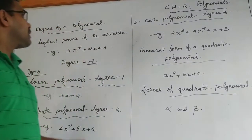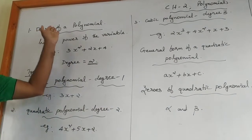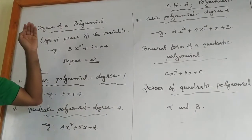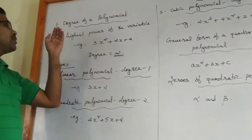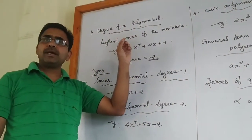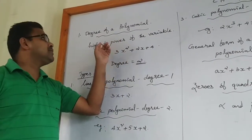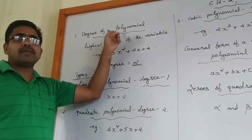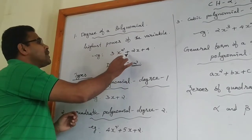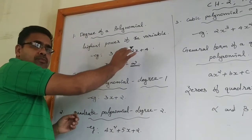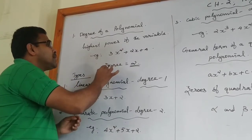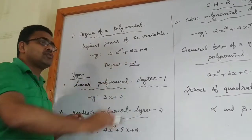In polynomials, we studied about what is the degree of a polynomial. What is meant by degree of a polynomial? The highest power of the variable. In a polynomial, the highest power of its variable is the degree of a polynomial. For example, 3x² + 2x + 4 is a polynomial. Here the highest power of its variable is 2, that is why the degree of this polynomial is 2.